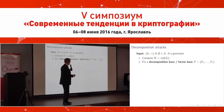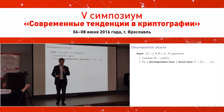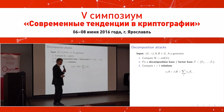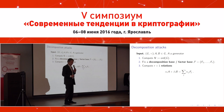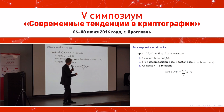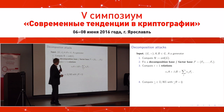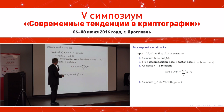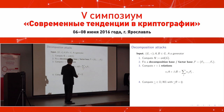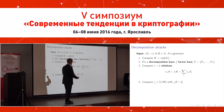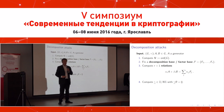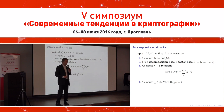We first compute the group order, then fix what is classically called a factor base — now also called a decomposition base. We compute so-called relations, which is exactly the same thing as what Igor Semaev presented in the previous talk. We form a matrix by writing these equations as rows and sum them up so that we get zero on the right-hand side, by computing an element of the left kernel of this matrix.